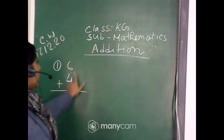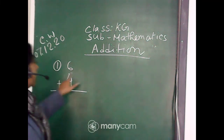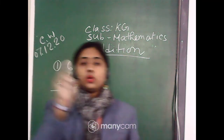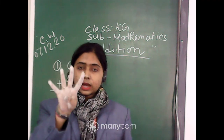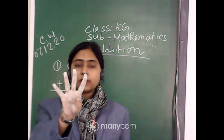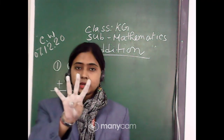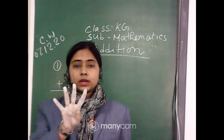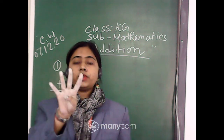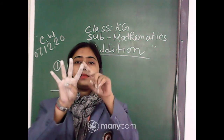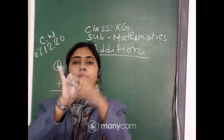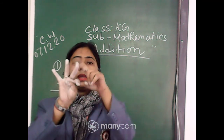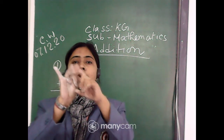So, 6 plus 4 — the small number is 4. I am showing with my right hand 4 fingers: 1, 2, 3, 4. Then, 6 after 4 fingers — we will count: 7, 8, 9, 10. 6 after 4 fingers: 7, 8, 9, 10.